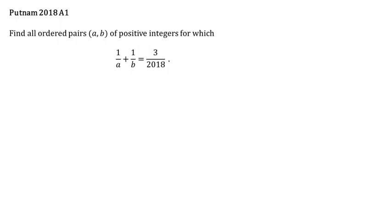Today's video features a classic number theory problem from the Putnam 2018. We have to find all ordered pairs (A, B) of positive integers for which 1/A + 1/B = 3/2018.